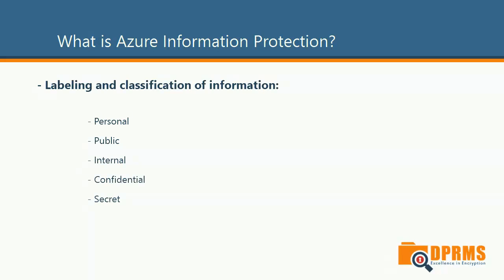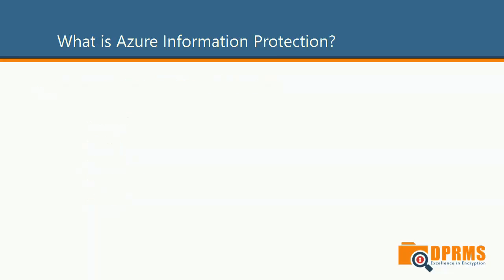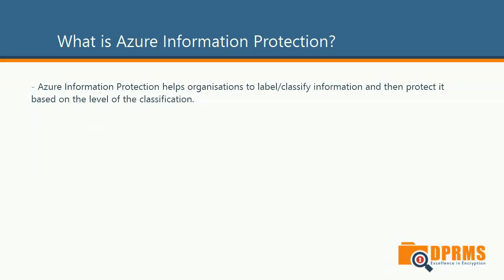The kind of information that will fall into these categories can vary depending on what kind of company you are. The wording might be different, but in general they would all be similar in some sense. So how does Azure Information Protection fit into all this? Well, Azure Information Protection is designed to help organizations classify the information and then protect it based on the level of classification.